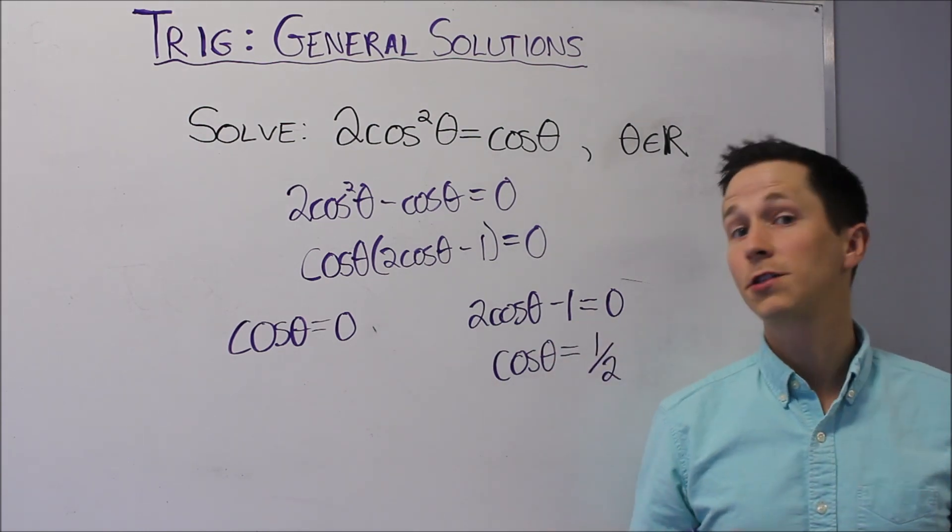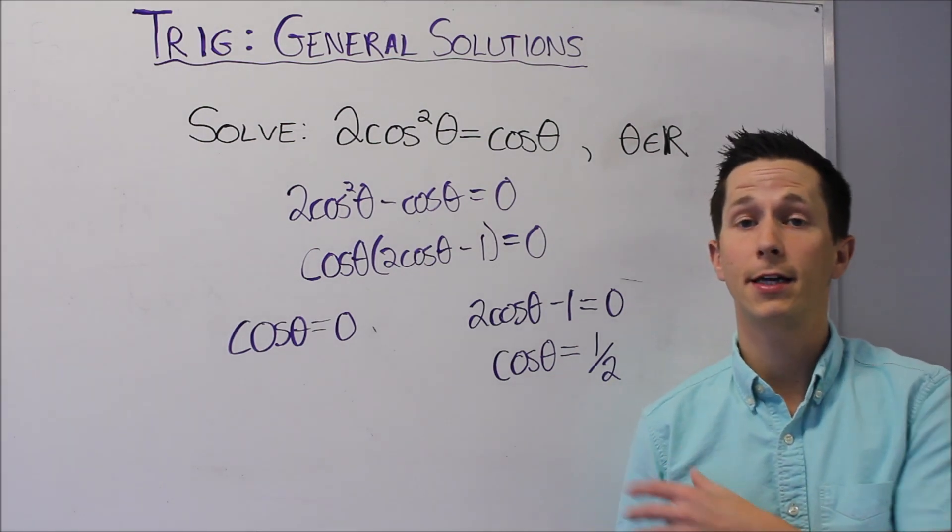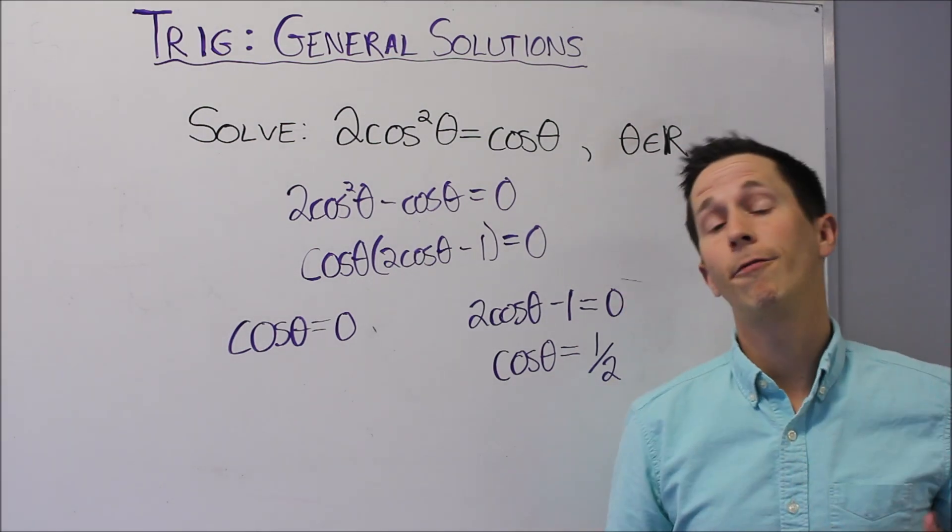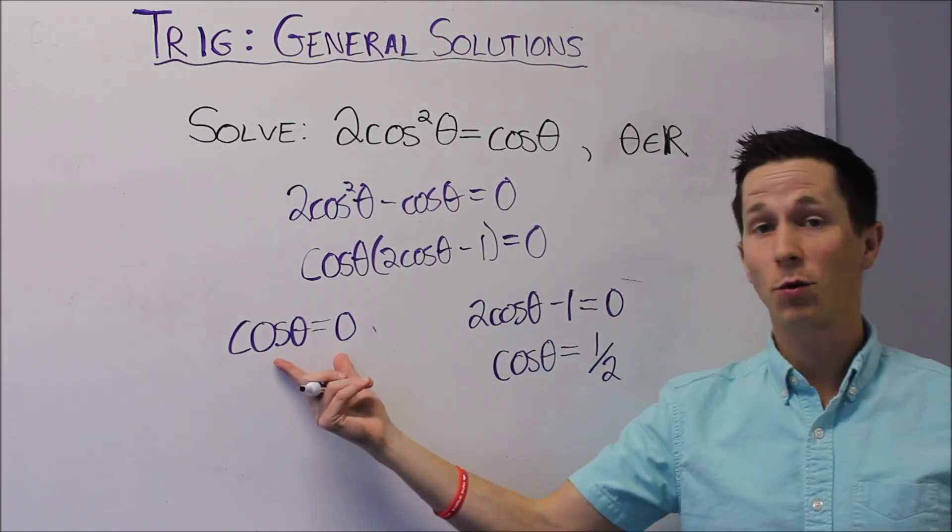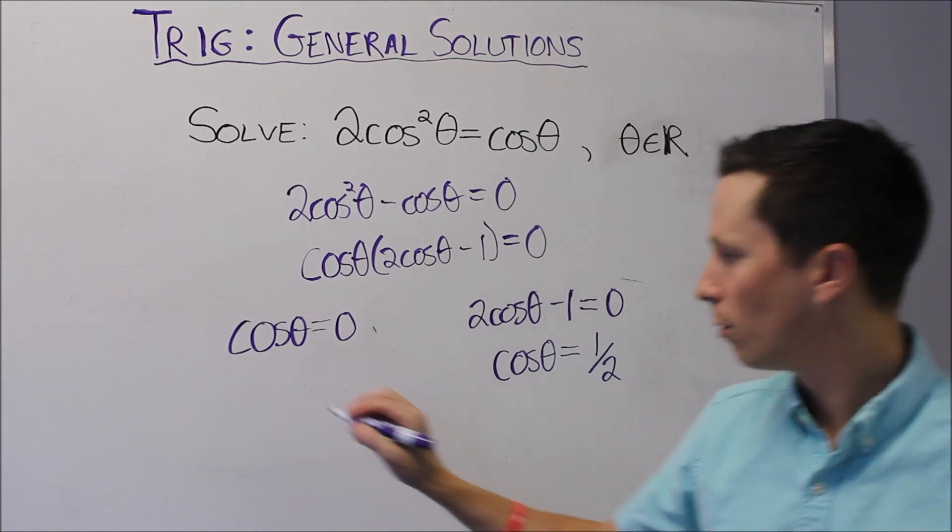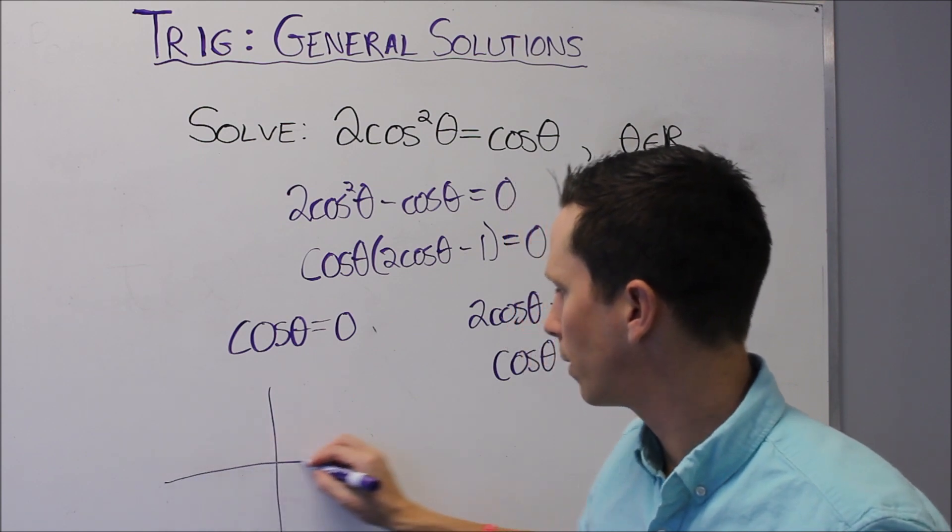So here's my two solutions for what cos theta needs to equal, but the variable in question is actually theta, it's actually the angle. So the question becomes, where does cos theta equals 0?